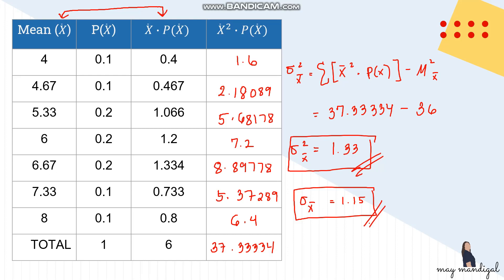The standard deviation of 1.15 means the sample means are 1.15 units away from the population mean. That's it for today — I hope you learned about the mean, variance, and standard deviation of the sampling distribution of sample means. See you next time.